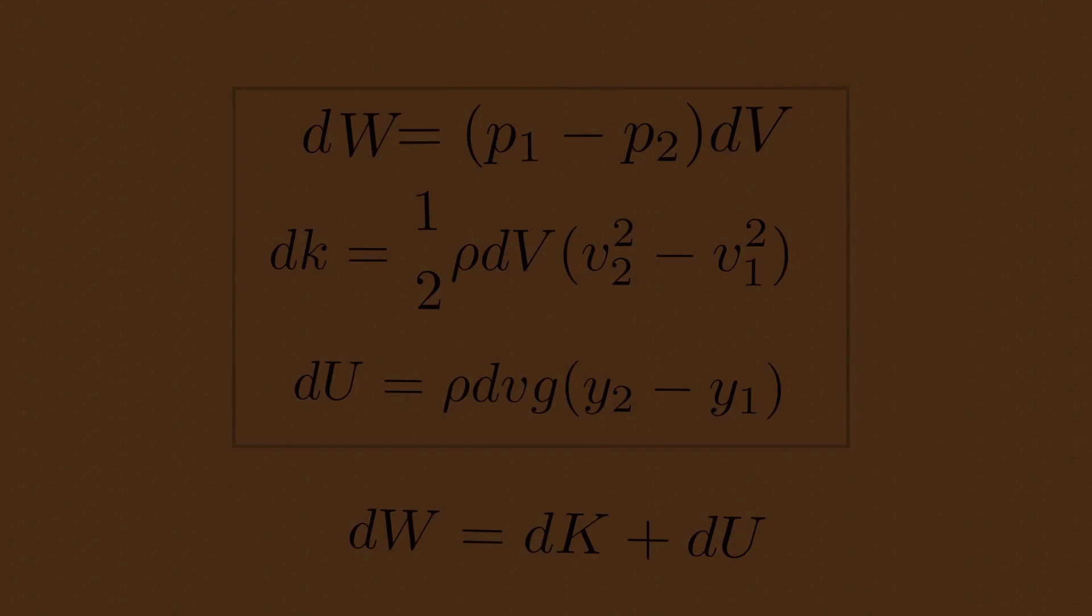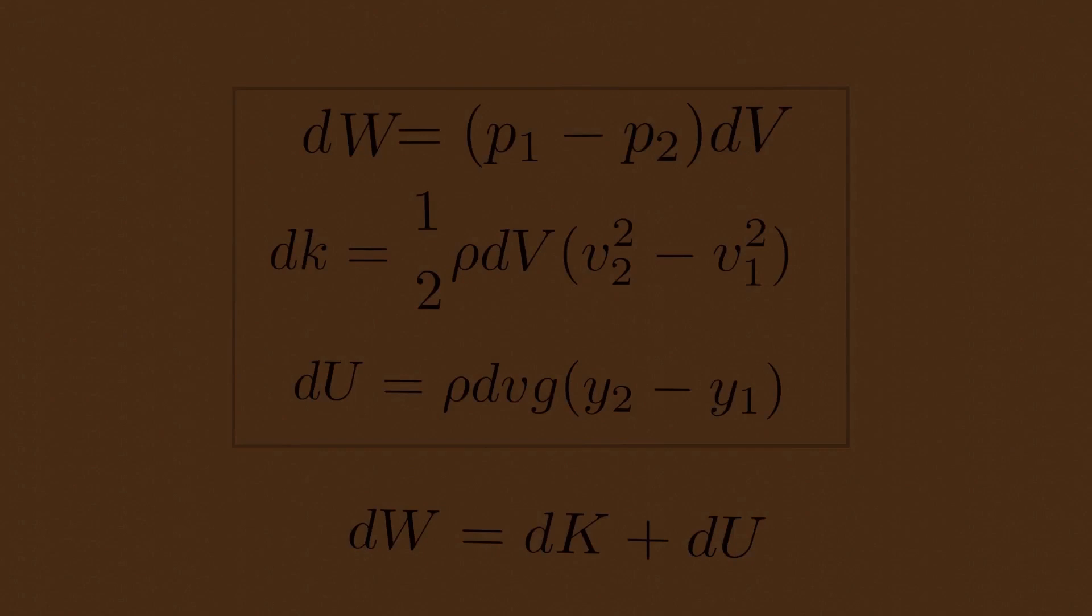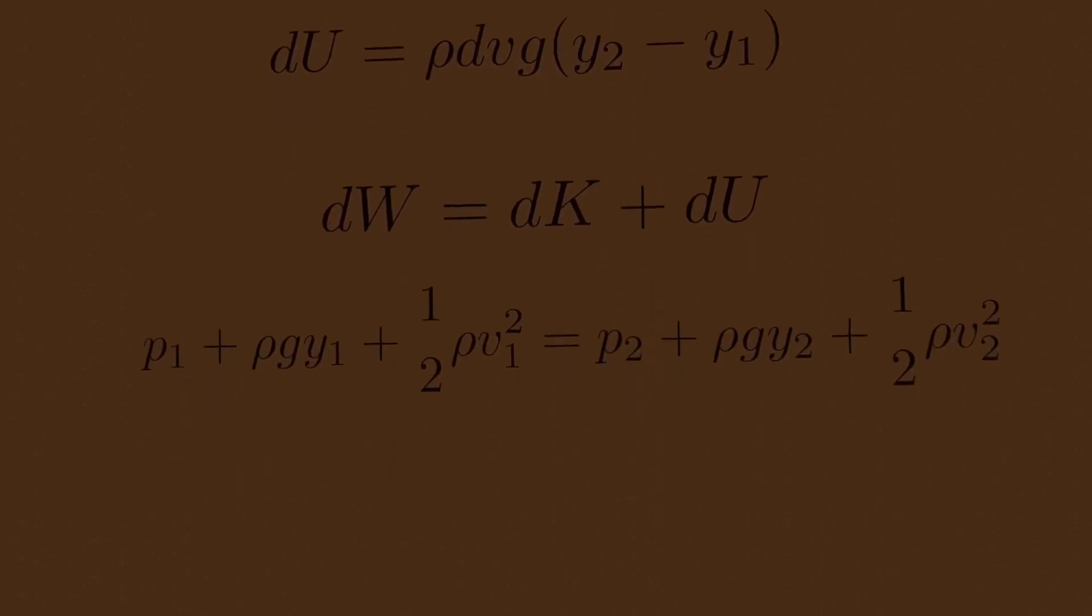The mechanical energy for the fluid between sections B and C does not change at all. The total mechanical energy is just the sum of kinetic and potential energy. Now combine the three equations and you will get the Bernoulli's equation.